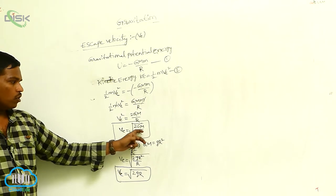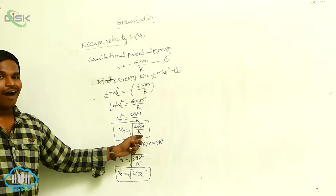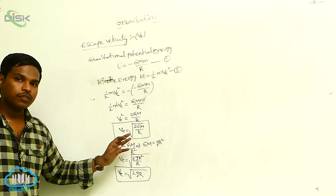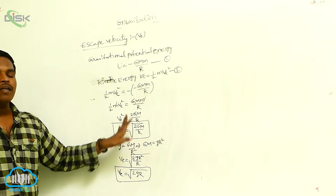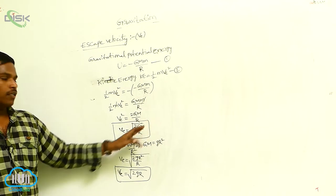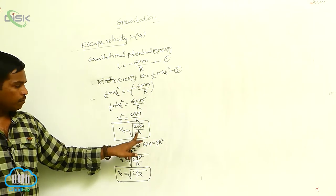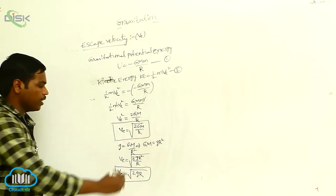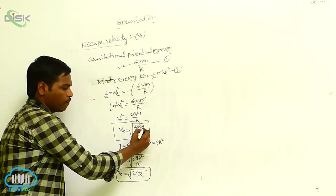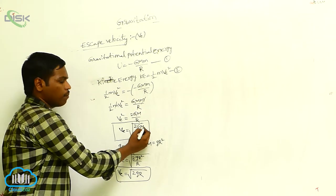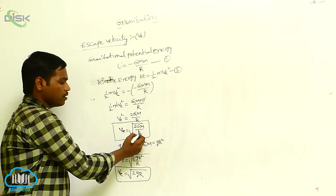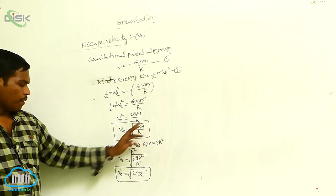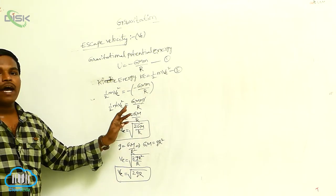Observing the equation Ve equals the square root of 2GM by R, the escape velocity of an object does not depend on the mass of the object. It depends on the mass of the Earth — or the mass of the planet — and also on the radius of the planet.